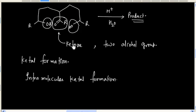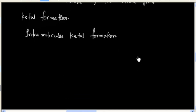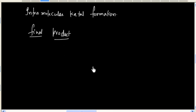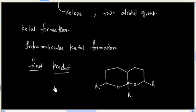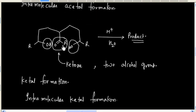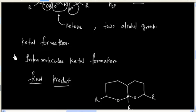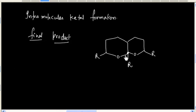Mechanism of this reaction is same as we have discussed above. Let us write the final product that is ketal. So, this will be the final product we will have. So, this carbon will have an alkyl group. So, this is ketal.